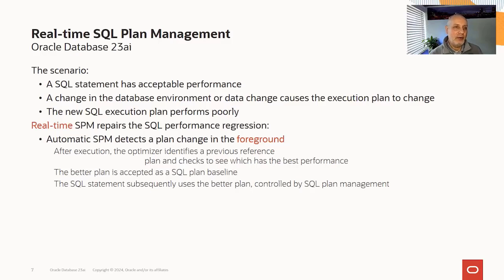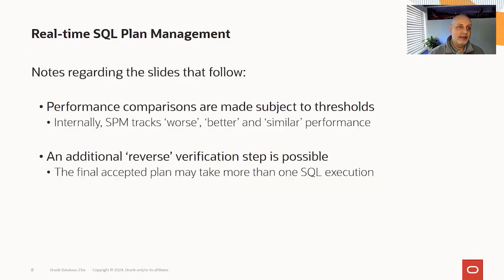Real-time SPM repairs the performance regression — that's what it's designed to do. In this case it detects the plan change in the foreground, so rather than relying on a background process to wake up, the foreground detects the change has happened. Once execution is completed after the plan has changed, the optimizer will identify a previous reference plan and check whether the performance of that previous plan was better than the new plan. The better plan is then accepted as a SQL plan baseline, and subsequently the SQL statement continues to use the better plan.